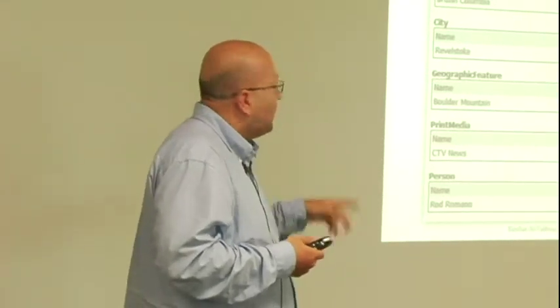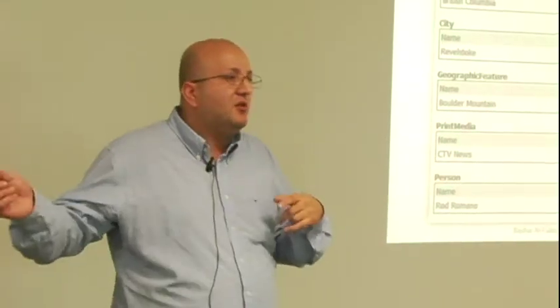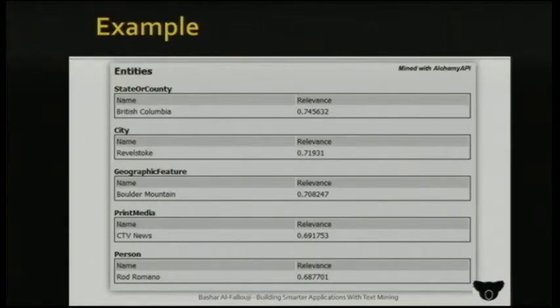You want to use that relevancy score — it's really important. I will show you in the demo that if you don't use it, you end up with a lot of noise. You have to put some kind of threshold on your side, like accepting only things higher than 0.5. Otherwise, you may end up with garbage.